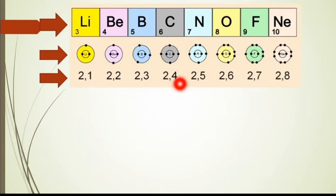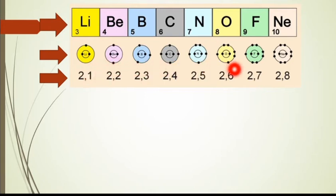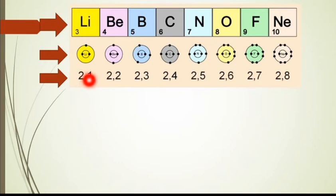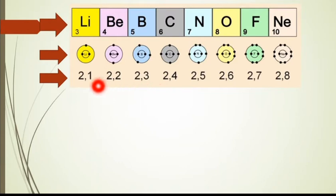Left to right अगर हम move करें, तो atomic number increase तो हो रहा है, लेकिन atomic number increase होने की वज़े से electrons भी increase हो रहे हैं, लेकिन वो electrons same shell में आ रहे हैं। इनका number of shells नहीं increase हो रहा है। तो क्योंकि number of shells नहीं increase होते left to right, इसी वज़े से इनका size भी नहीं बढ़ेगा - क्योंकि size तो बढ़ता है जब number of shells बढ़ेंगे। Second period के जितने भी elements हैं इन सब में two shells present हैं।